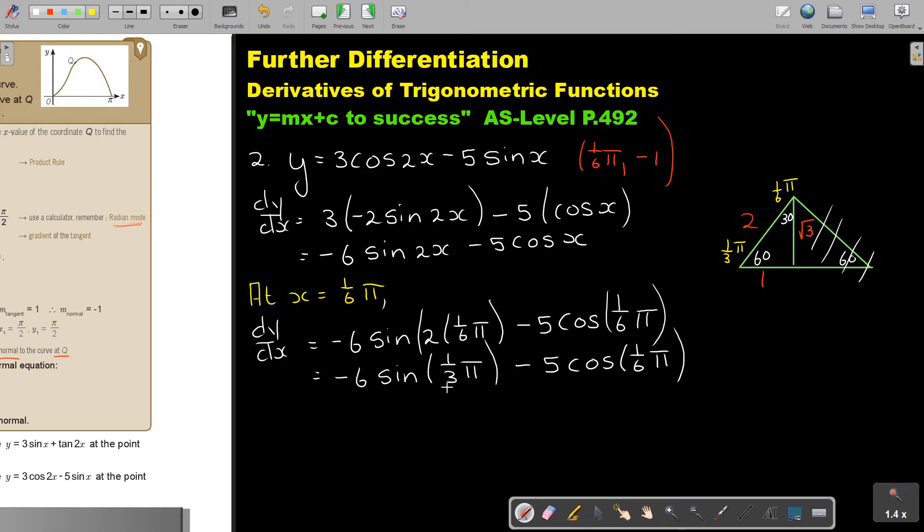Now, if I'm working this out, I can start by saying negative 6. What is sin? Sin 1 over 3 π. So, sin is opposite over hypotenuse. So, it's square root 3 over 2. Minus 5 cos. Cos is adjacent over hypotenuse. So, it's also square root 3 over 2 because it's from different angles.